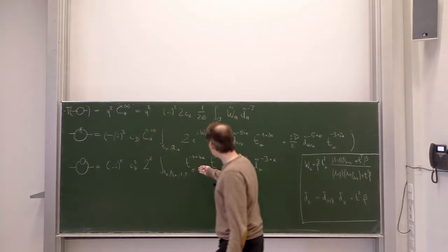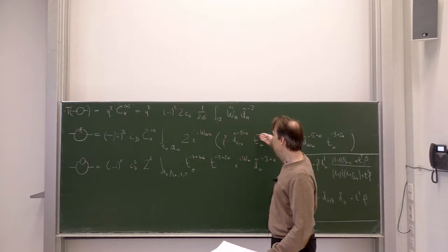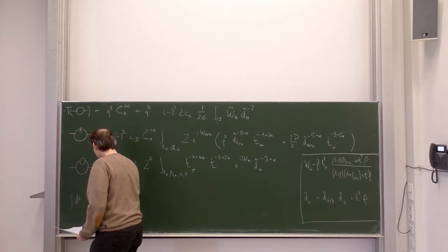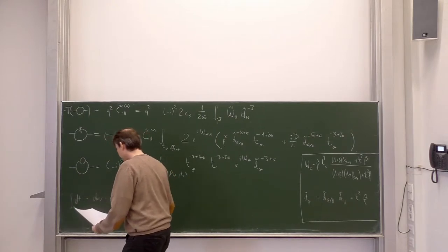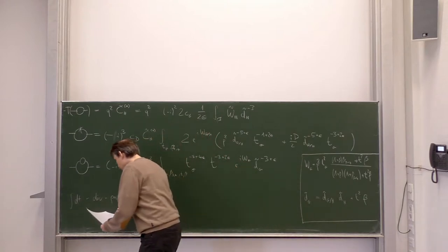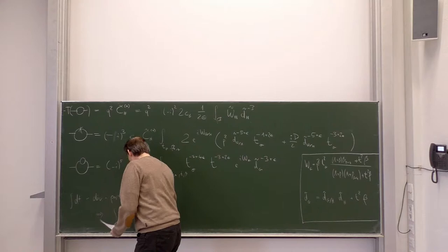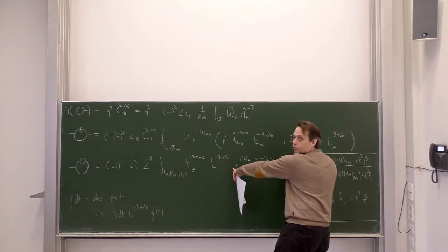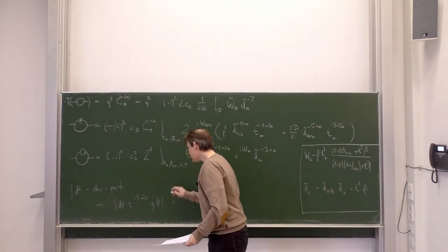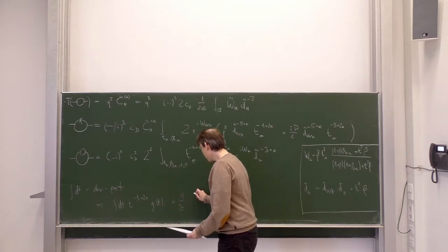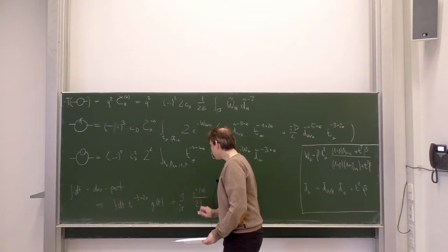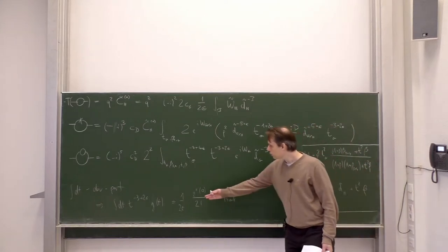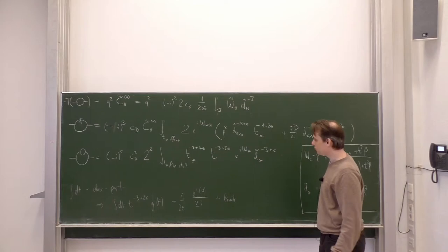Now let's extract the divergence coming from the t integration and combine it with the previous counterterm diagram. Looking at the t integration, the structure is: integral dt times t to the power minus 3 plus 2 epsilon times a function g of t, where g of t is this product of the two functions. We can apply our formula: this equals 1 over 2 epsilon times the second derivative with respect to t at t equals 0, divided by 2 factorial, plus something finite. For the finite term we have an explicit expression in terms of g of t minus the Taylor polynomial up to second order in t.